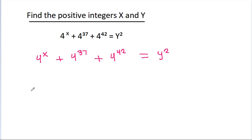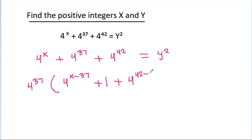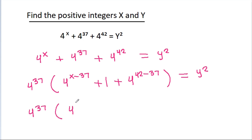And if we take 4 power 37 common, then it will be 4 power 37 times 4 power x minus 37 minus 1 minus 4 power 42 minus 37, which is equal to y square. And 4 power 37 times 4 power x minus 37 minus 1 minus 4 power 5 is equal to y square.